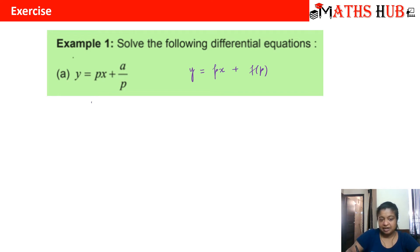You will simply say that this is Clairaut's equation. If this is Clairaut's equation, then what is the solution? The solution is simply put P is equal to some constant C. So your solution becomes Y is equal to C of X plus A by C. This is your solution.